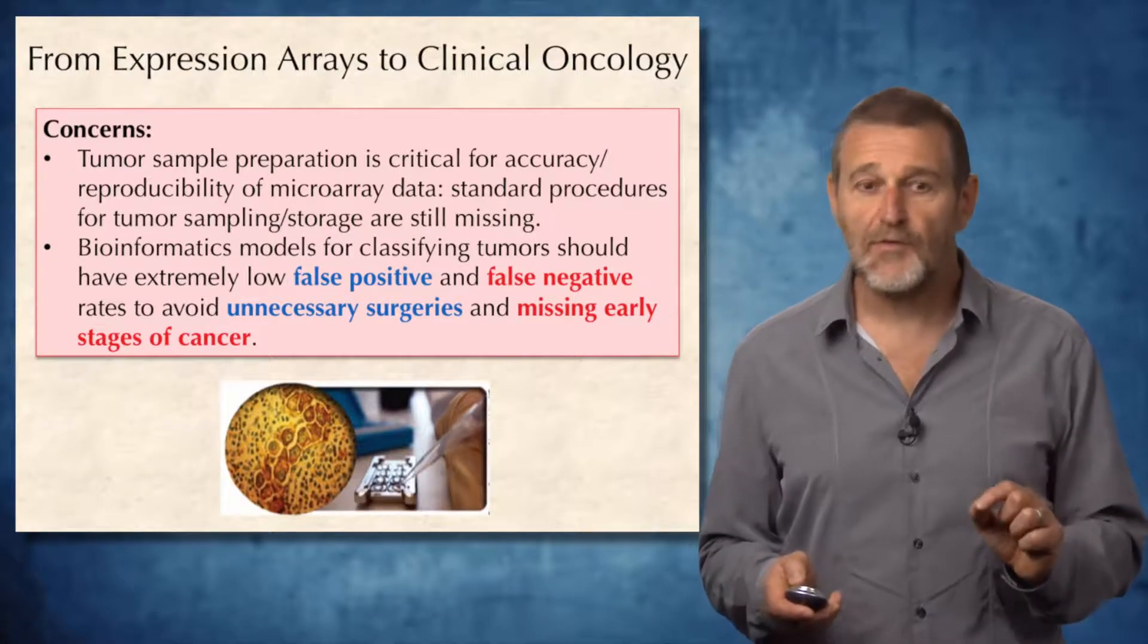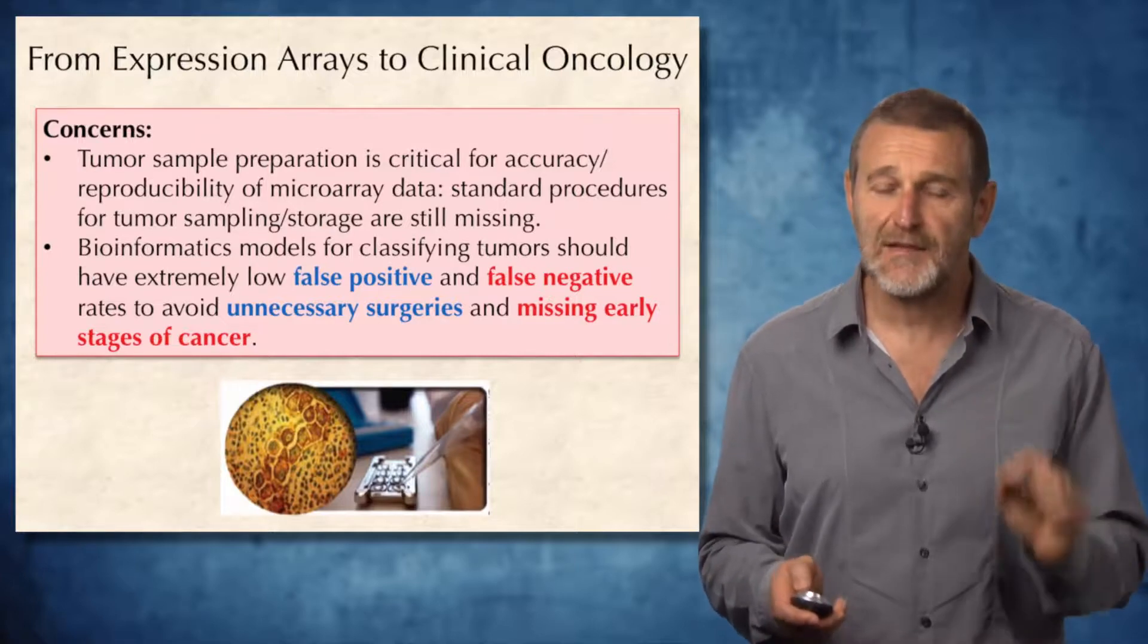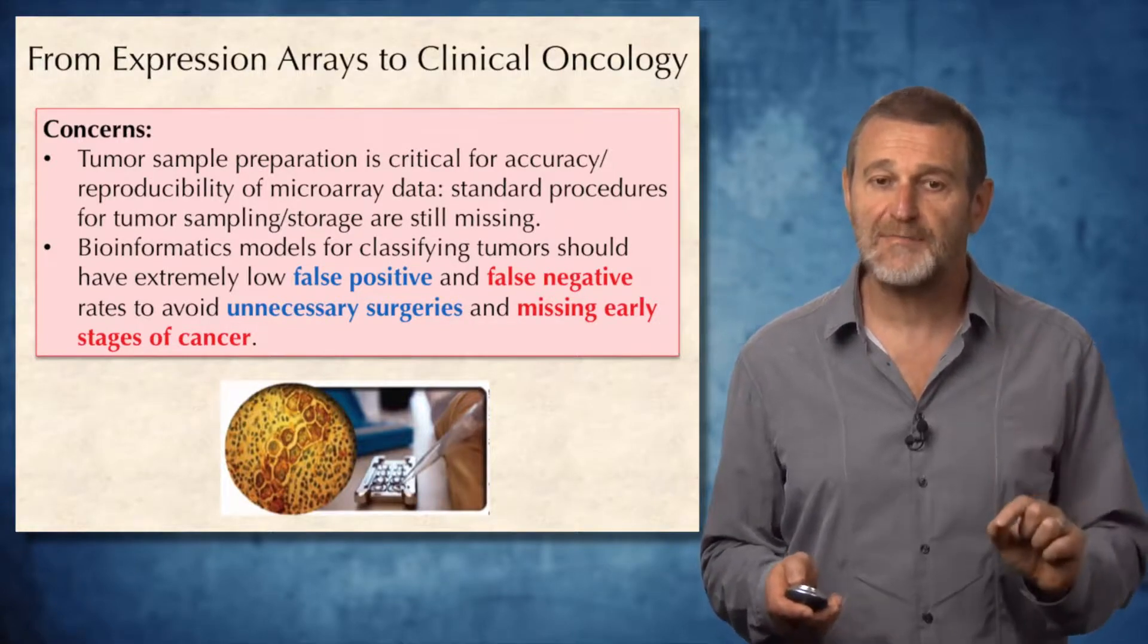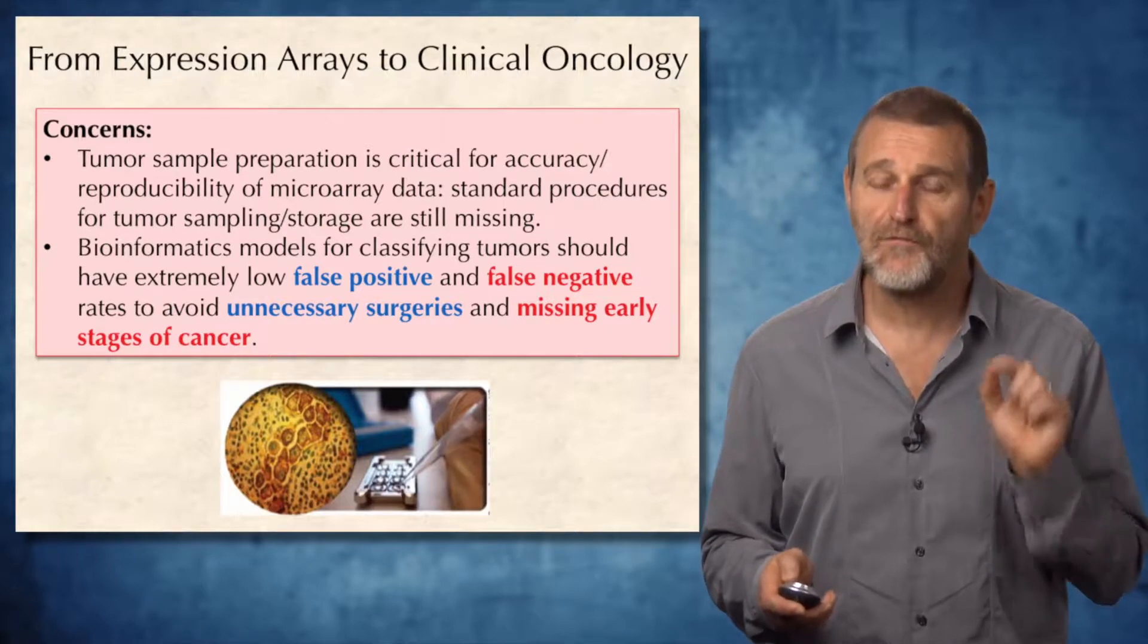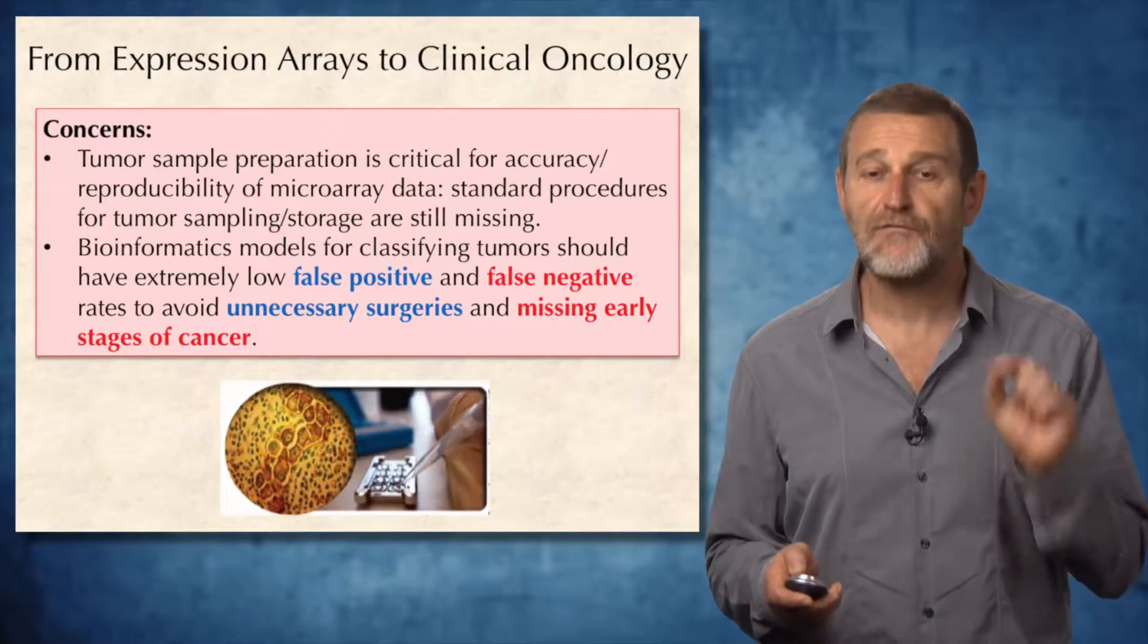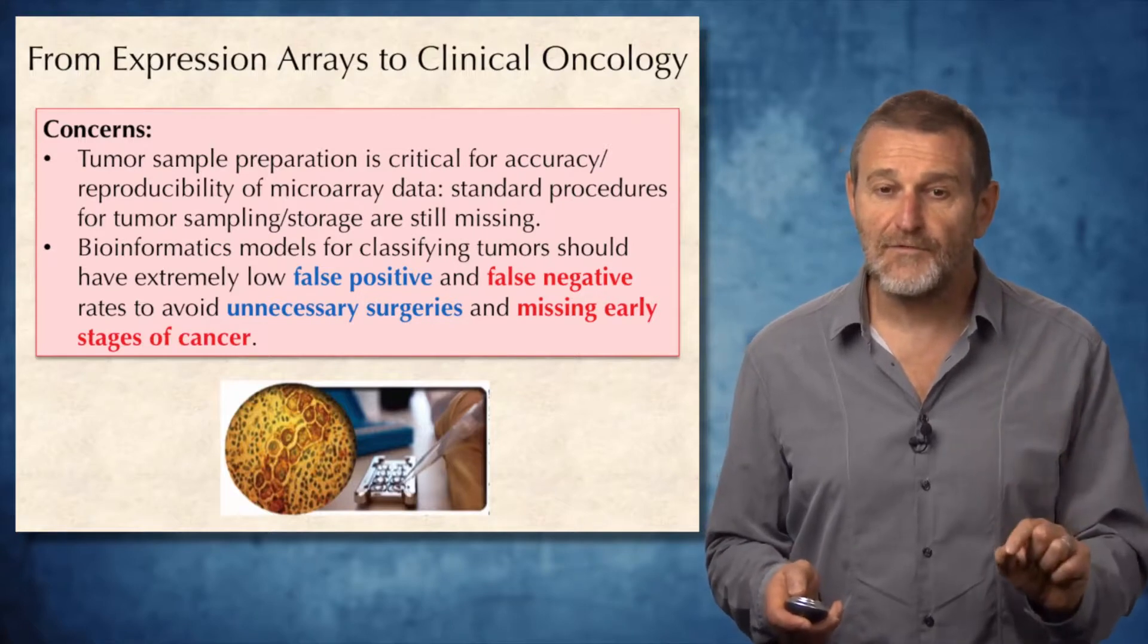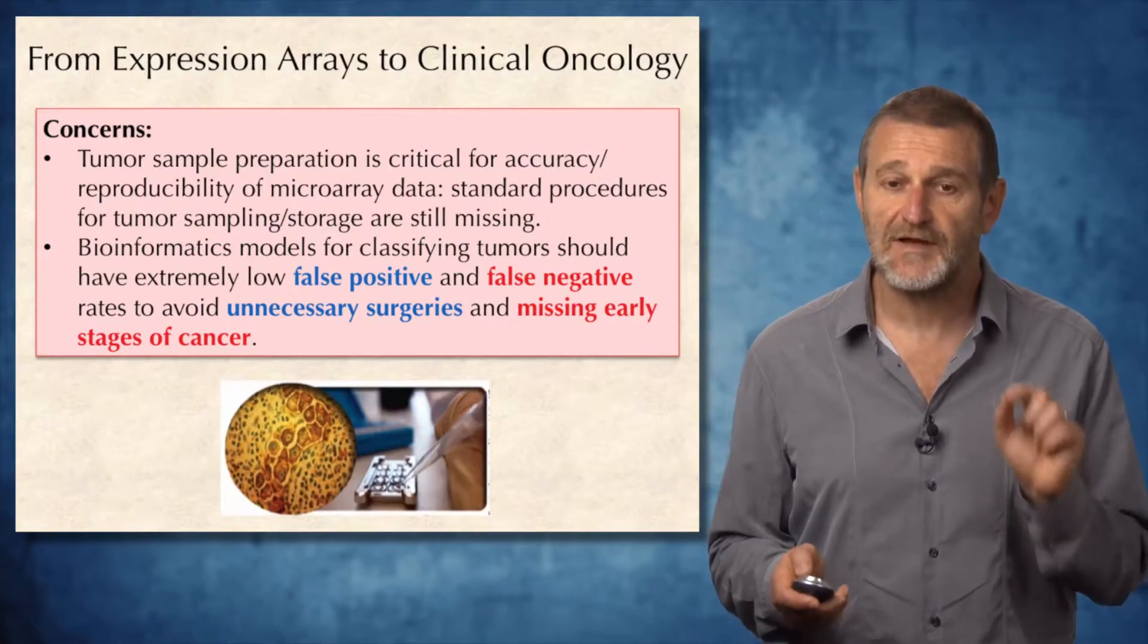Very important, bioinformatics models for classifying tumors should be extremely accurate if bioinformaticians want them to be applicable to medical applications. Indeed, they should have extremely low false positive and false negative rates, because false positives lead to unnecessary surgeries, while false negatives lead to missing early stages of cancer.